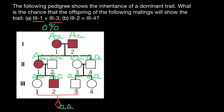Now let's take a look at the second pairing: three-two and three-four. If this couple of cousins would marry, what are the chances that their child would inherit this genetic disorder?